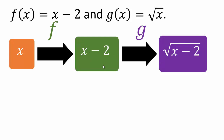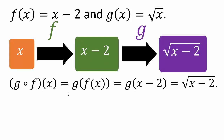When you apply the output of one function as the new input to another, this is called composition of functions. The notation is: you start with x, apply function f, then apply function g. It's called g with a little circle f — g composite f — and you read it as g composite f of x.